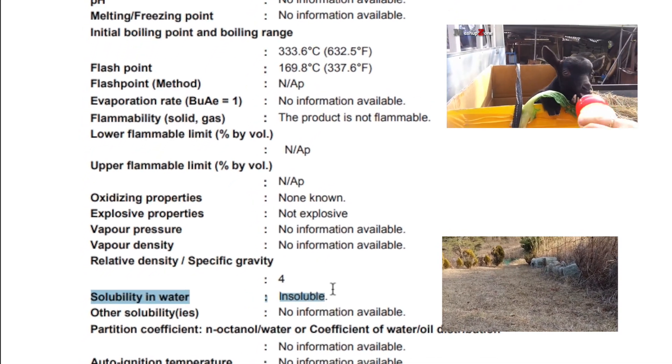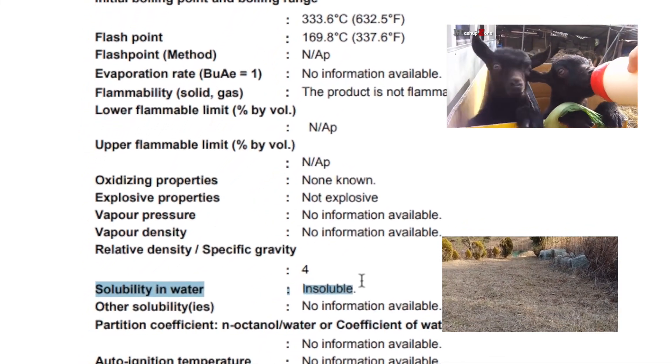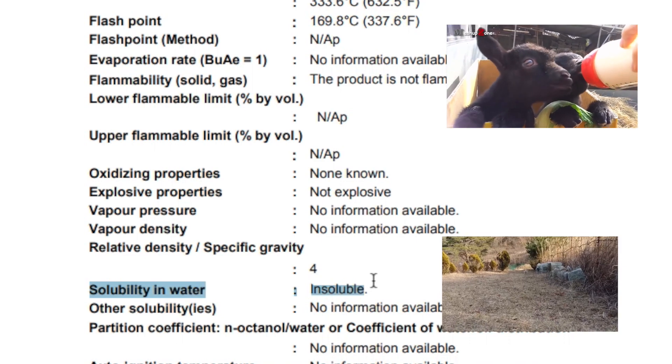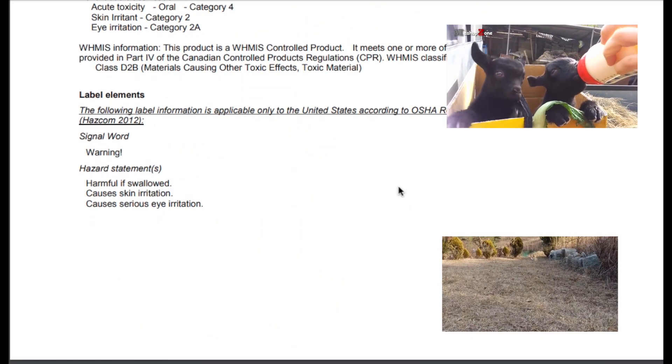For example, it says here that copper carbonate is insoluble in water, so you wouldn't want to use it as a dye or ink and that'll just save you a lot of time.